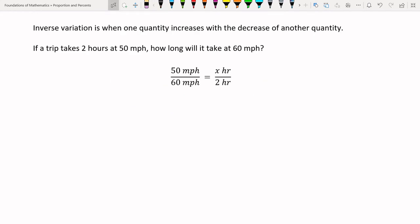The last type of special application that I'm going to cover in this video is inverse variation. So the previous two have had the same kind of idea where as one increases, the other increases. Or as one decreases, the other decreases. Inverse variation is as one increases, the other quantity decreases. And vice versa. In this case, if a trip takes two hours at 50 miles per hour, how long will it take at 60 miles per hour? If it takes two hours at 50 and then we increase how fast we go, then that means the time the trip takes should decrease. So as speed increases, time decreases.